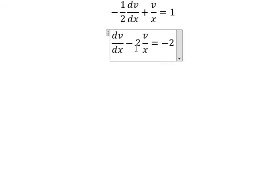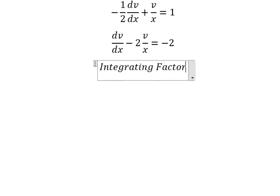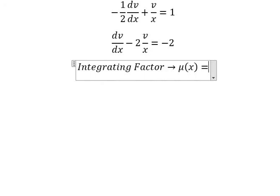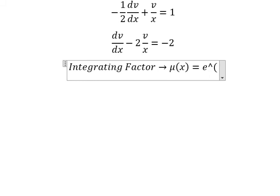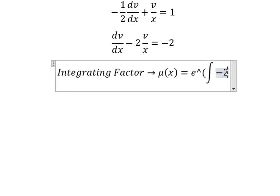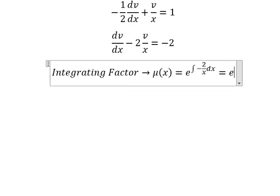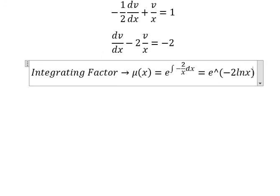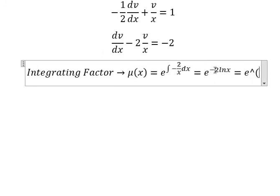So we have v and the first derivative of v, so we can use the integrating factor. We need to find mu of x equals to e to the power of the integral. We see that negative number 2 over x is next to v — that is for the integrating factor. We have negative number 2 go inside the natural log here.